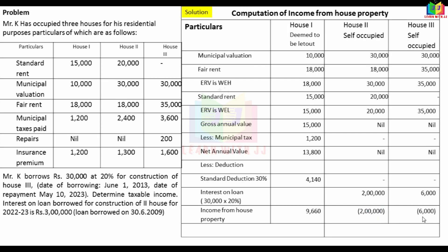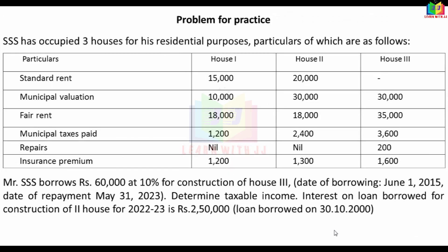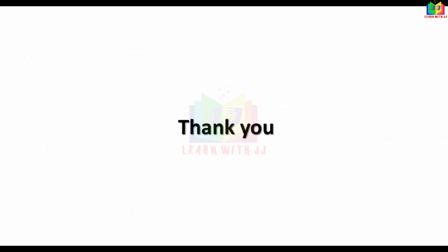After applying all deductions, house 1 shows a loss of Rs. 2,000 and another house shows a loss of Rs. 6,000. The net income from house property works out to Rs. 1,96,340. If you have any difficulty with this problem, please work it out and share your answer in the comments — I will check your answer. The concept of interest on loan is important in this chapter and can help you score 10 marks easily. Thank you for your patient listening.